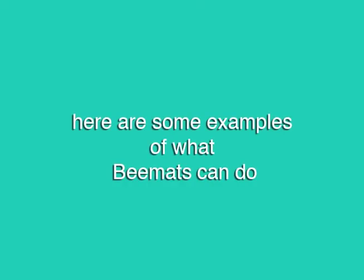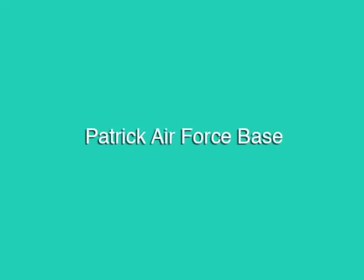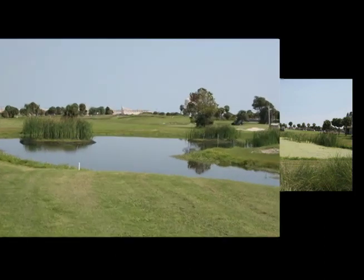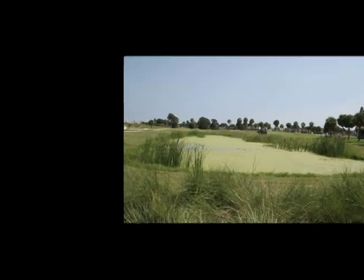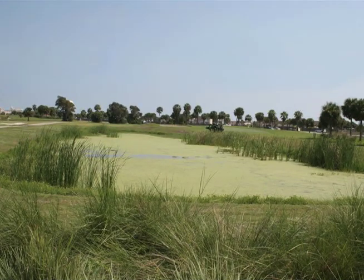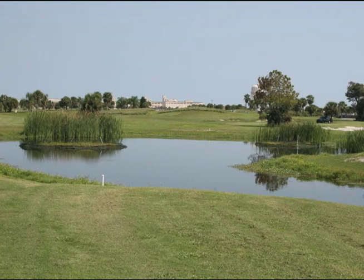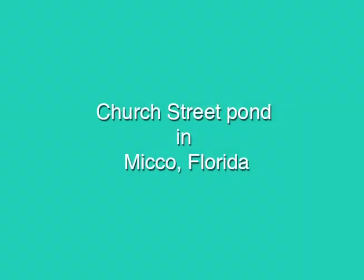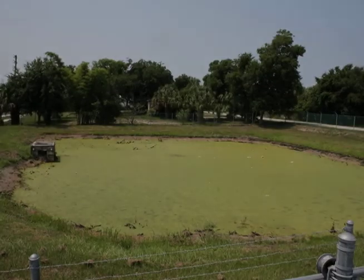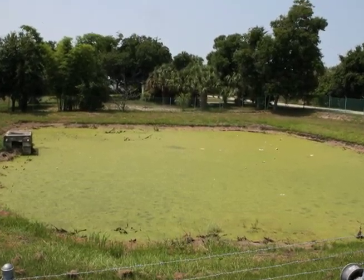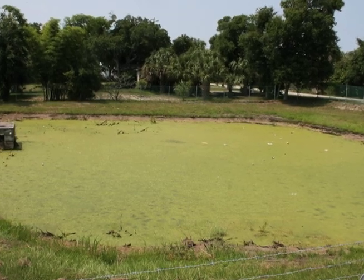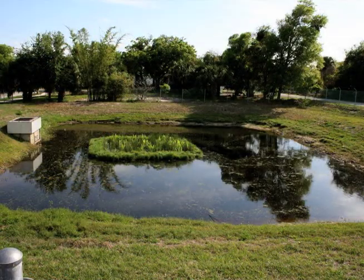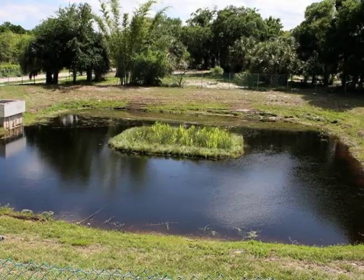Here are some examples of what BMATs can do. First, at Patrick's Air Force Base in eastern Florida, there were two side-by-side ponds receiving the same amount of water from the same source. One received two BMATs, and the other was left untouched. Over time, BMATs cleared the first pond, while the other became algae-ridden. Another example was demonstrated at Church Street Pond in Micco, Florida. This neighborhood pond was receiving stormwater runoff from the surrounding area and developed a very bad duckweed problem. Duckweed thrives on very high nitrates. BMATs did an amazing job of removing the nitrates from the water and wiped out the source of food for the duckweed.